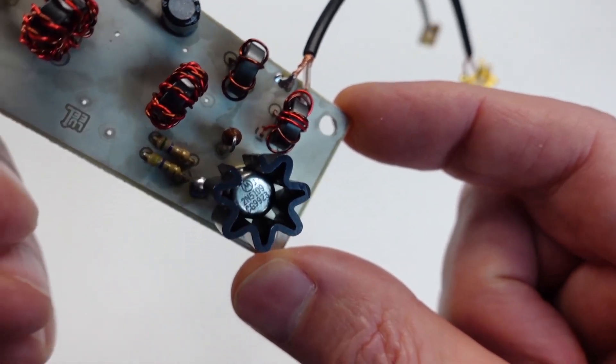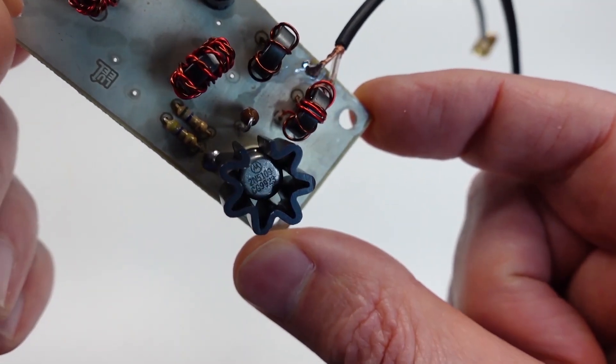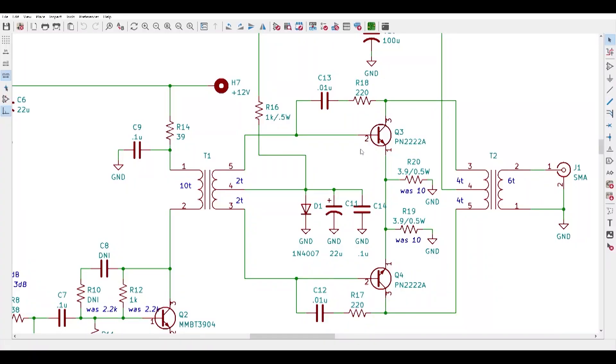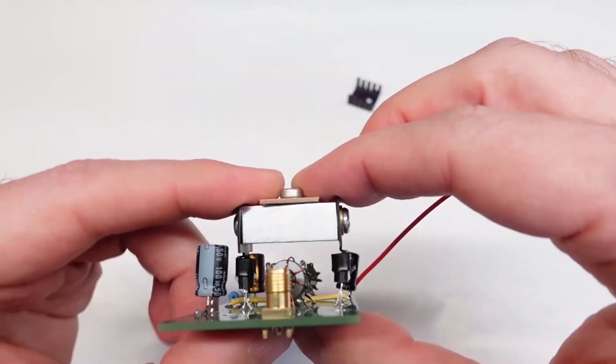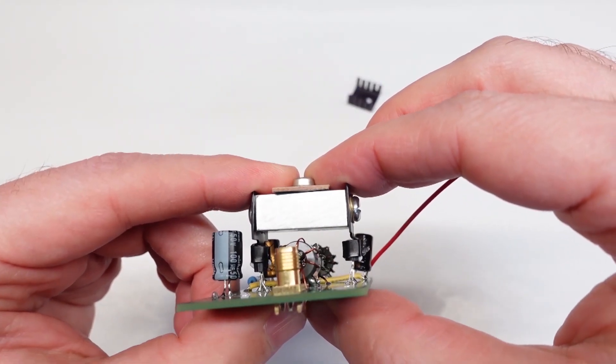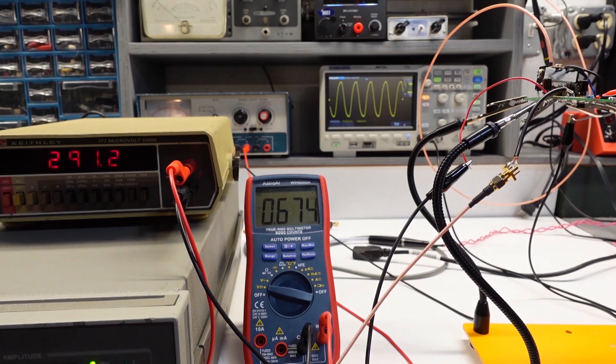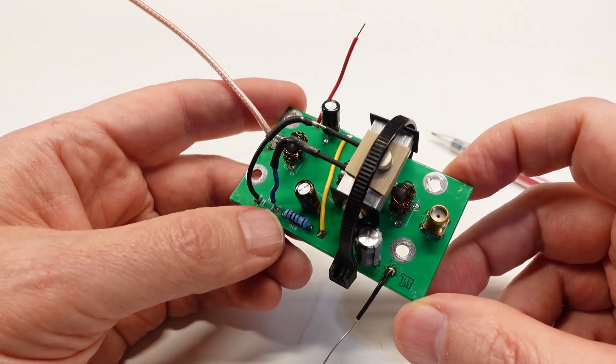The 2N5109 ran excessively hot because I was driving it with high quiescent current to keep it in class A mode. So I came up with a third design that uses a pair of 2N2222s in the last stage operating in class AB, which promptly experienced thermal runaway. I came up with a really bodgy workaround to fix that problem.